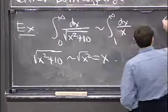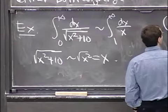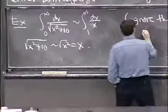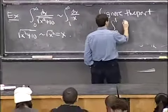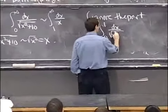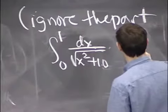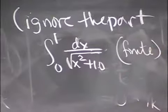So we're going to ignore the part integral from 0 to 1 dx over square root of x² plus 10, which is finite anyway and unimportant.